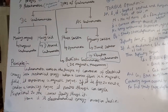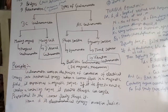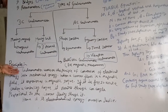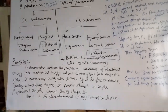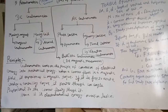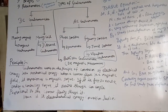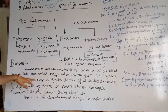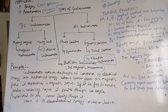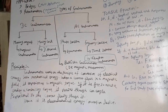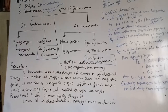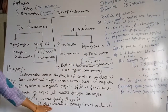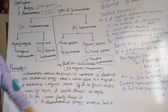Now come to the principles of galvanometer. As it is written here, the galvanometer works on the principle of conversion of electrical energy into mechanical energy. That is, it is an electromechanical energy conversion device that converts electrical energy into mechanical energy.